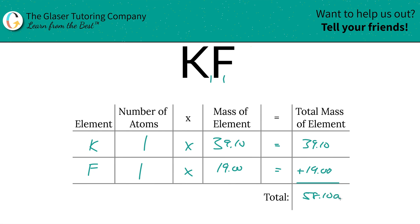And then all we have to do to find the total mass of the compound is just add this column up, and this is going to work out to be 58.10. The units here are going to be in terms of AMU, or atomic mass units, because we're solving for molecular mass. That's all there is to it. Now you know how to find the molecular mass of potassium fluoride. I'll see you in the next video. Take care.